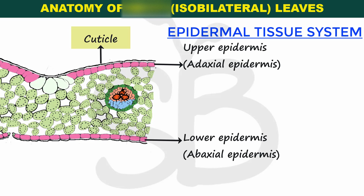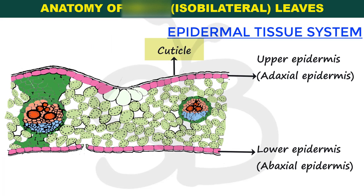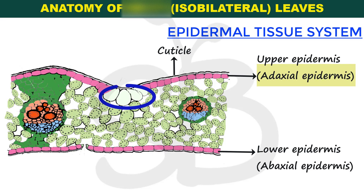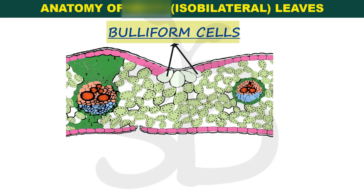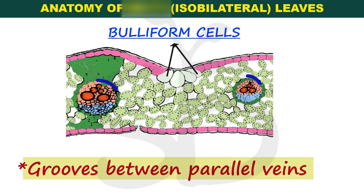The cuticle prevents water loss. In the adaxial epidermis cells, there are large, empty, and colorless cells called bulliform cells. These bulliform cells are located between two vascular bundles. This is the epidermis cells region. The vascular bundles represent the veins of the leaf.